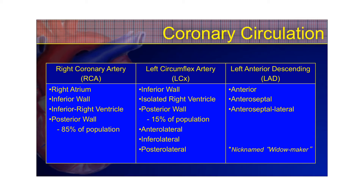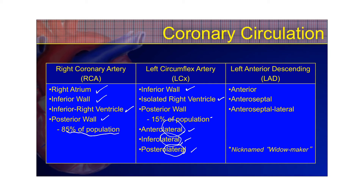Reviewing the different areas each coronary artery supplies — the right coronary artery typically supplies the right atrium, inferior wall, inferior right ventricle, and posterior wall (in 85% of people). The left circumflex provides blood flow to the inferior wall to a lesser degree, the posterior wall in about 15% of the population, and the anterior lateral, inferior lateral, and posterior lateral walls — it really dominates the lateral circulation. The left anterior descending provides blood flow to the anterior wall, anterior septal wall, and anterior septal lateral wall.